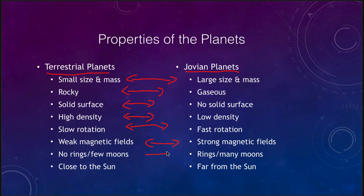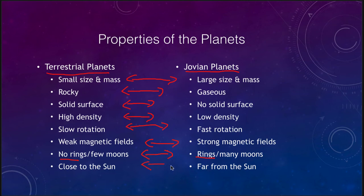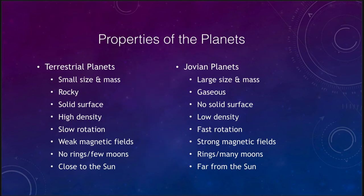When we look at satellites, we see lots of satellites in the outer solar system around the Jovian planets, and very few in the inner solar system. We also note that there are no rings among the terrestrial planets, while every single one of the Jovian planets has a ring. Finally, the terrestrial planets are all close to the Sun, while the Jovian planets are all far away.